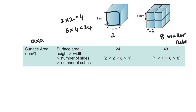When divided into smaller cubes, we get eight smaller cubes. Each has height and width of 1mm. Using the same formula: height × width × number of faces × number of cubes = 1 × 1 × 6 × 8 = 48 mm². Comparing the one larger cube and the smaller cubes, the surface area increases.